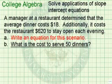We want to solve applications of slope-intercept equations. Let's look at the following scenario. A manager at a restaurant determined that the average dinner costs $18 per dinner. Additionally, it costs the restaurant $620 to stay open each evening.